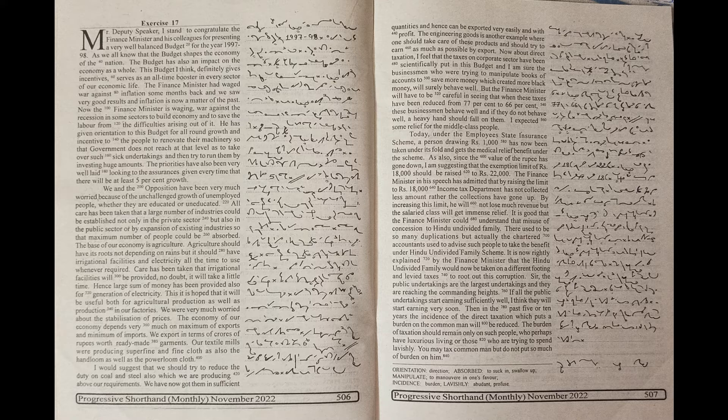It is good that the finance minister could understand that misuse of concession to Hindu undivided family. There used to be so many duplications but actually the chartered accountants used to advise such people to take the benefit under Hindu undivided family scheme. It is now rightly explained by the finance minister that the Hindu undivided family would now be taken on a different footing and levied taxes to root out this corruption.